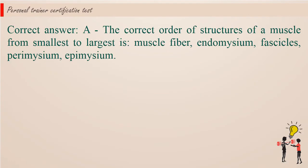Correct answer a. The correct order of structures of a muscle from smallest to largest is muscle fiber, endomysium, fascicles, perimysium, epimysium.